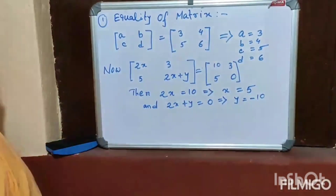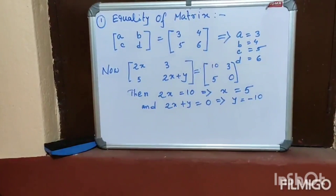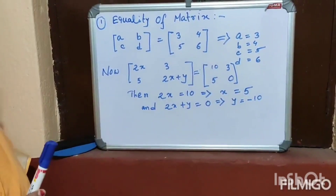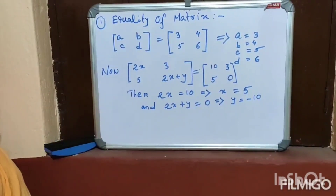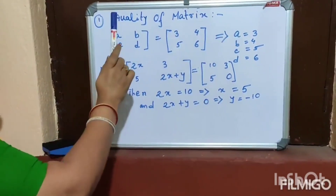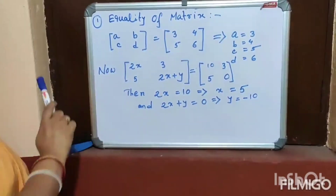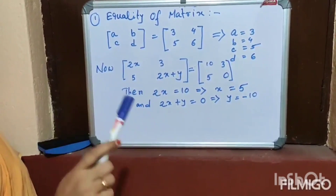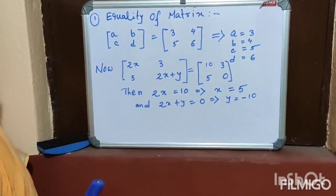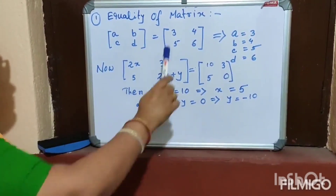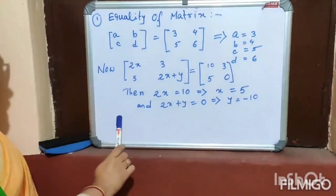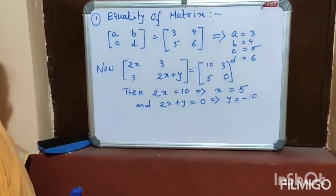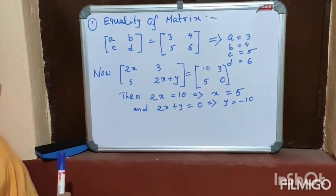What is equality of matrix? Equality of matrix means each and every element of LHS is equal to each and every element of RHS. Am I clear? Okay.